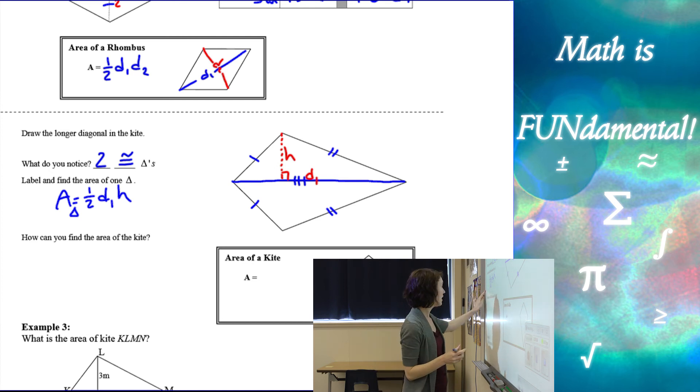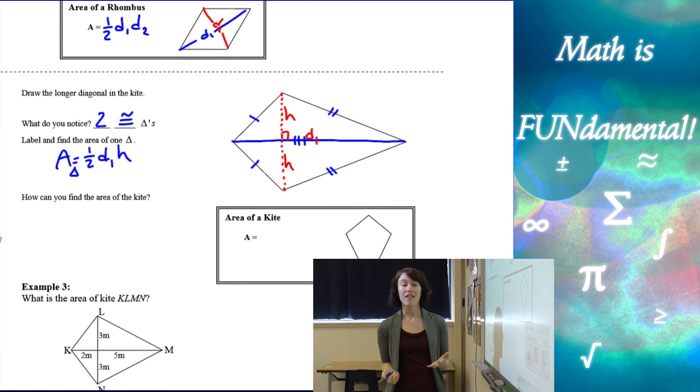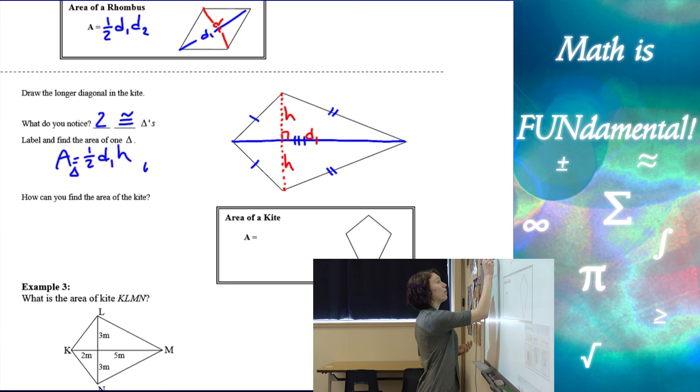But if we think about the height that I just drew, if I extend that, and we know that the diagonals are bisected, then this is actually our other diagonal. So where H equals half of D2, or D2 equals two times the height.